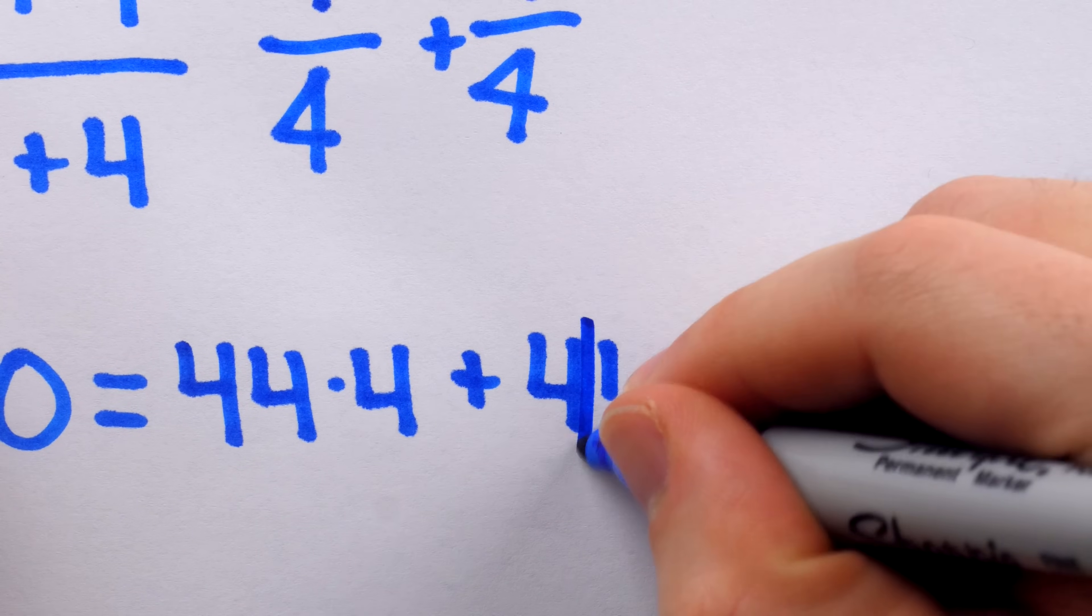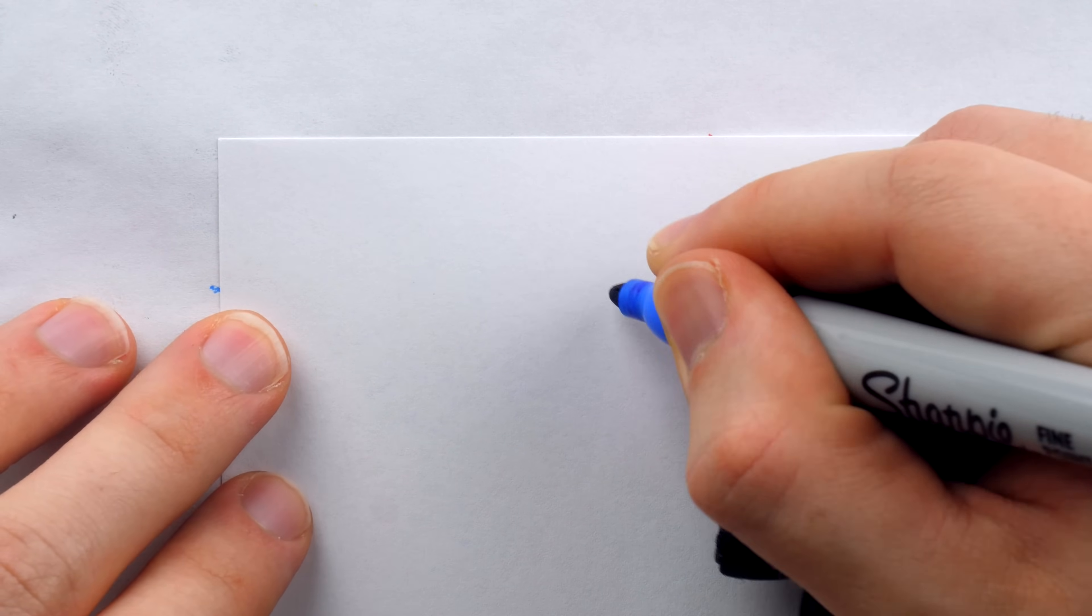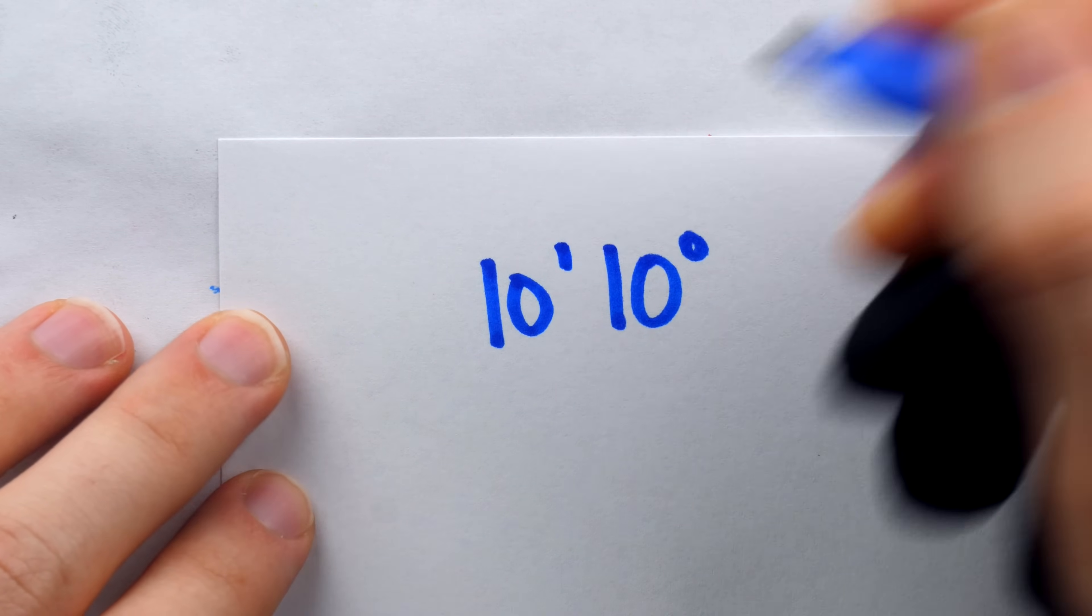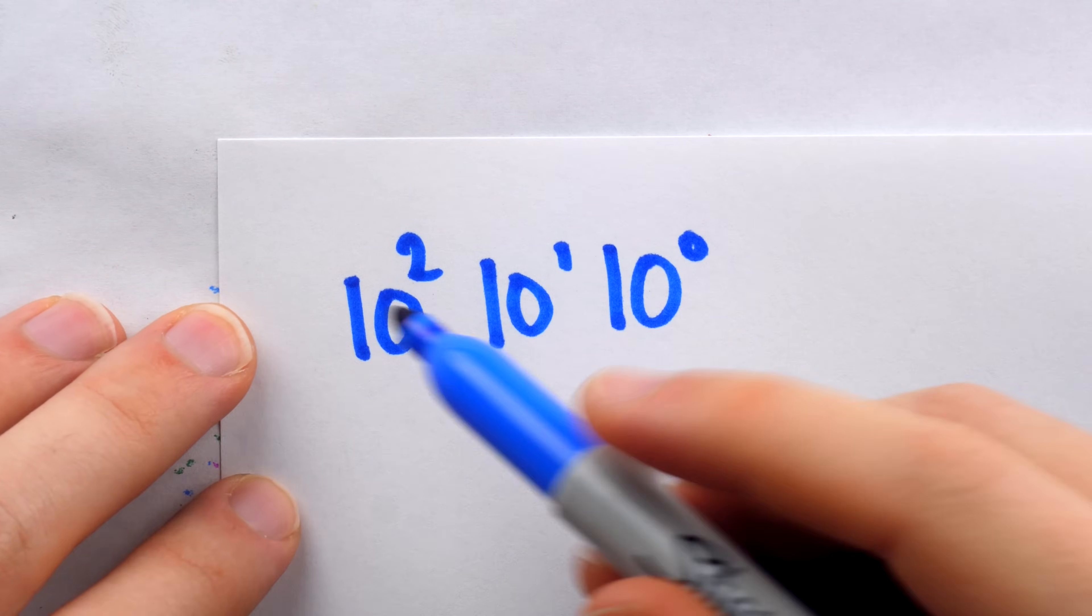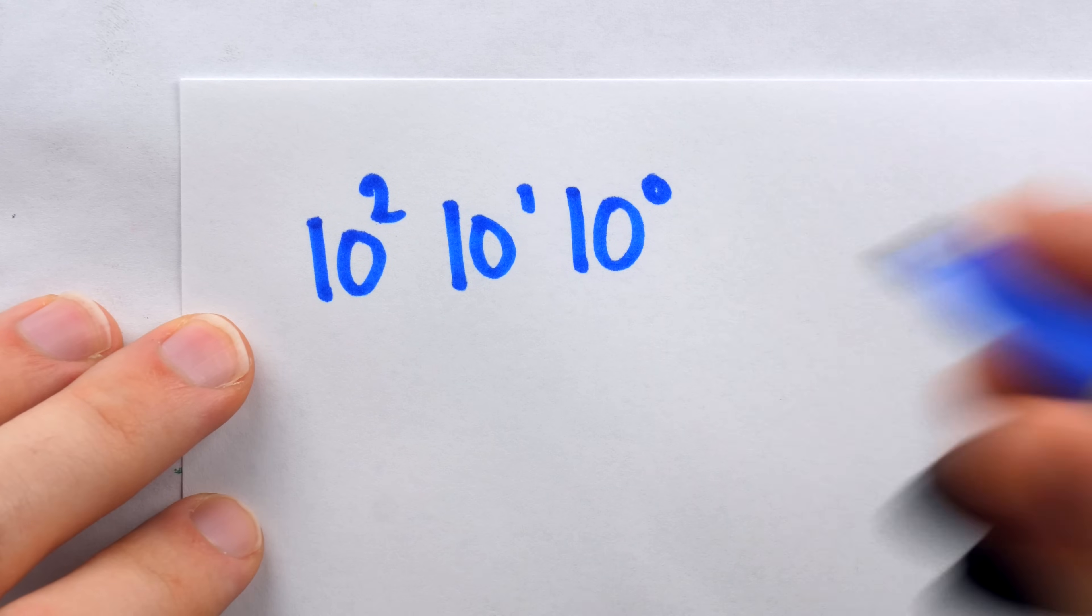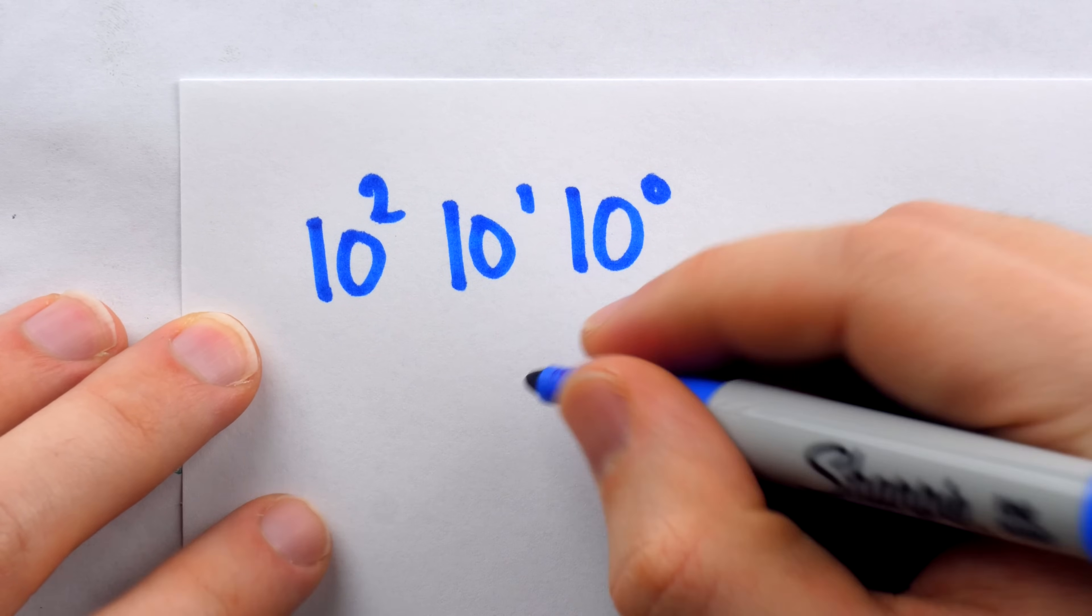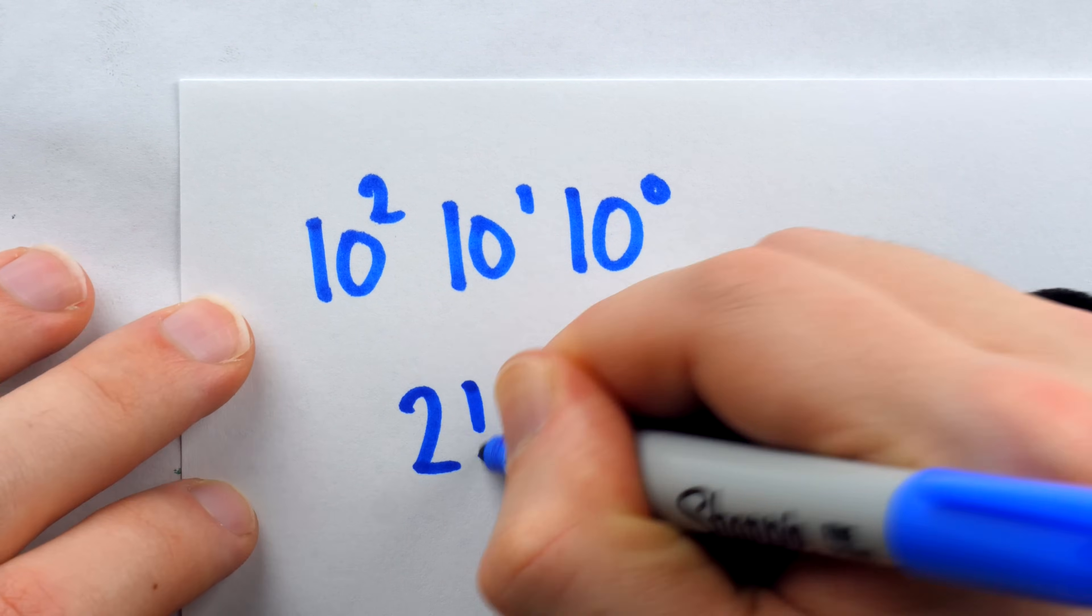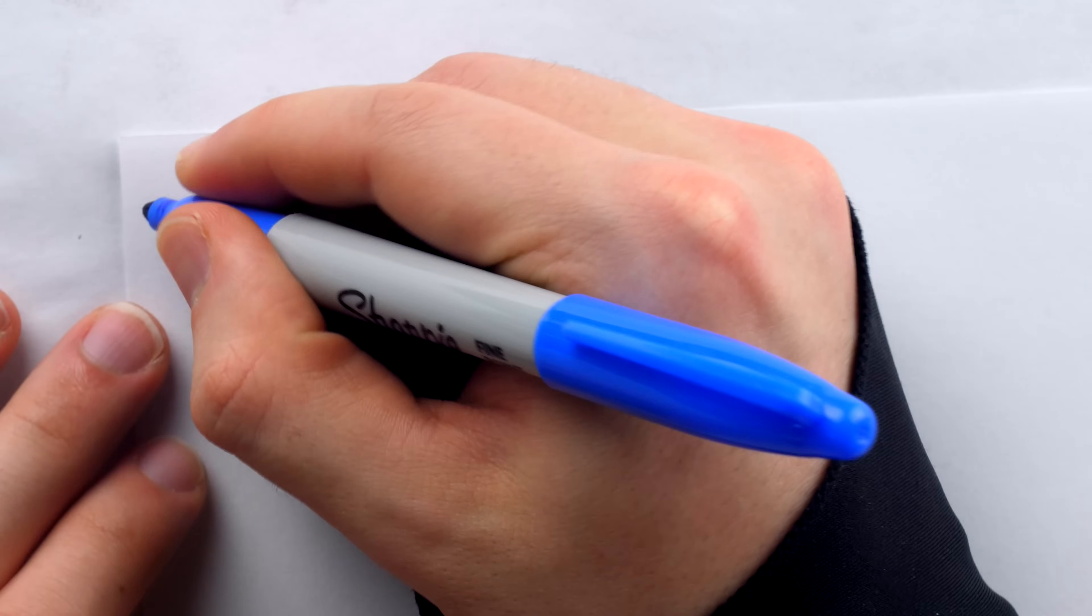And hey, speaking of factorials, there's this crazy thing called a factorial base system. In our base 10 system, the digits represent copies of 10 to the power of 0, and then copies of 10 to the power of 1, and then copies of 10 to the power of 2, and so on. 1s place, 10s place, 100s place. But in the factorial base system, the first digit represents copies of 0 factorial, and then the next is copies of 1 factorial, then copies of 2 factorial, then 3 factorial, and so on.